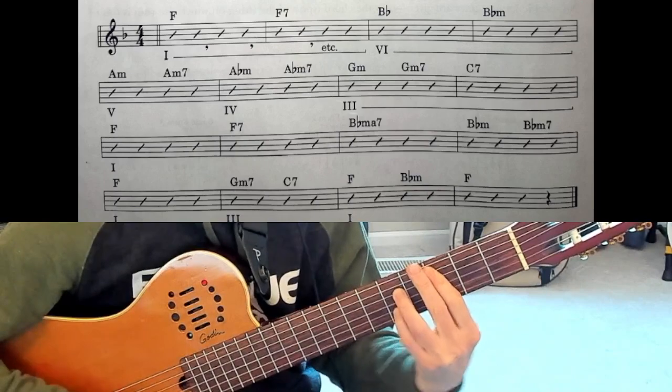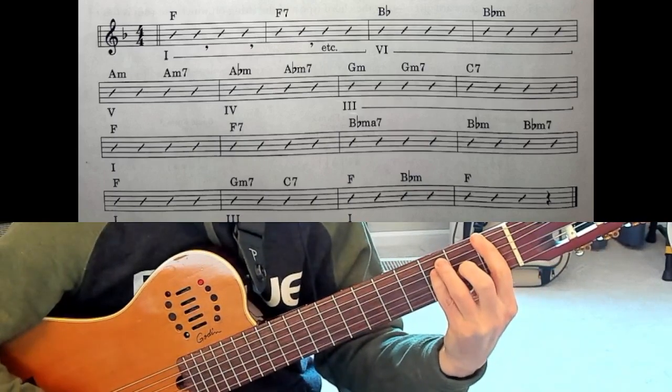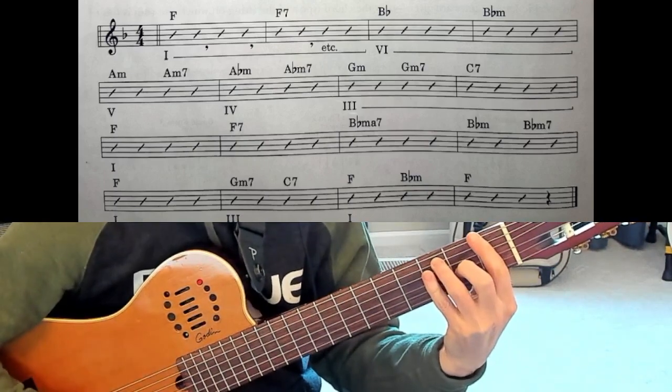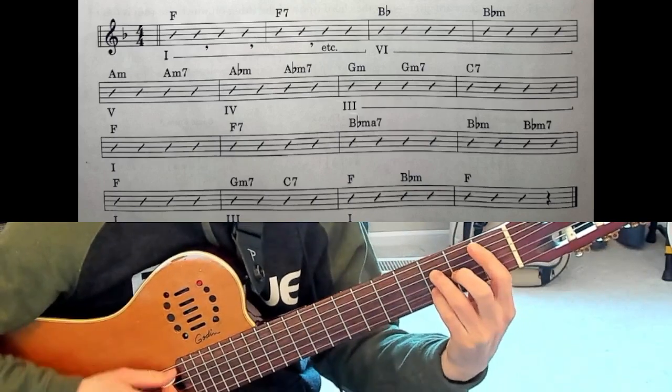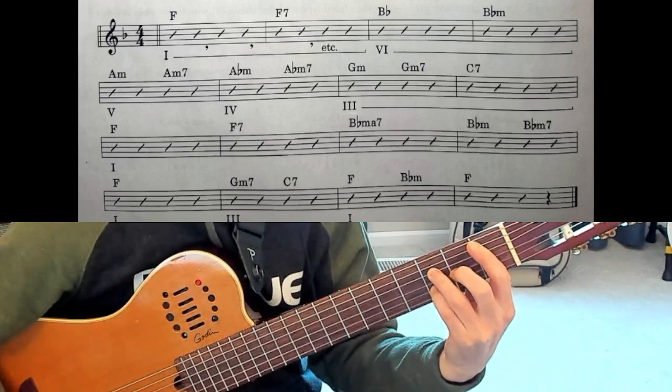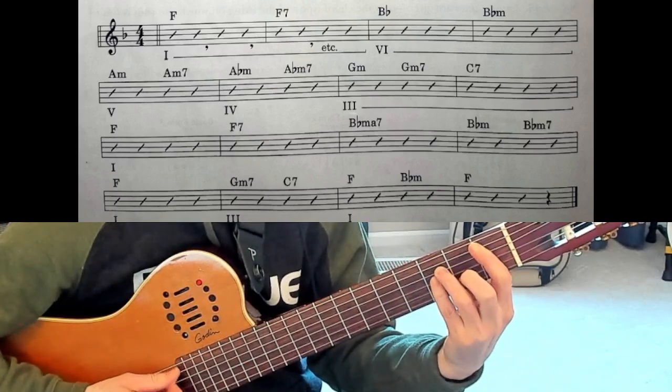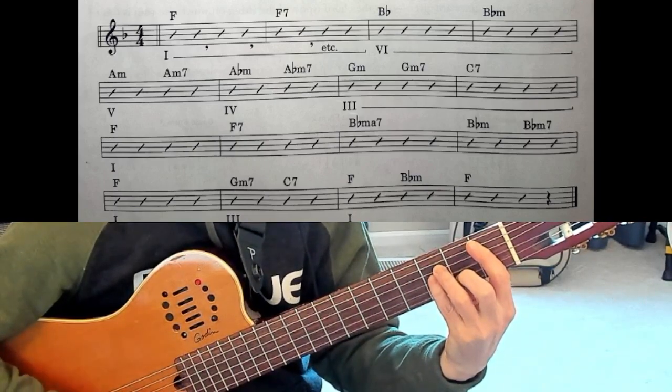Okay third line. F major again, F7. Now because it's still Roman numeral one, Bb major seven is going to be here. And then I have a Bb minor, minor seven.